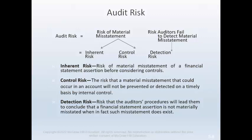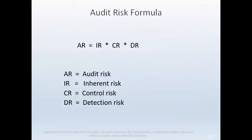The risk of material misstatement is made up of two components: inherent risk and control risk. Inherent risk is the possibility of material misstatement of an assertion before consideration of the client's internal controls. Control risk is the risk that a material misstatement could occur in a relevant assertion and not be prevented or detected on a timely basis by the client's internal controls. Detection risk is the only risk the auditor can control — it is the risk that the auditor's procedures will lead them to believe a material misstatement does not exist when in fact one does. The audit risk formula illustrates this: AR equals IR times CR times DR.